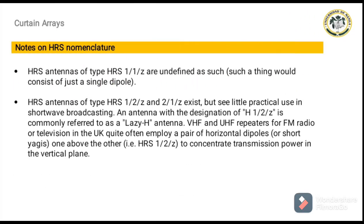Regarding notes on HRS nomenclature: HRS antennas of type HRS 1 1 Z are undefined, as such a thing would consist of just a single dipole. HRS antennas of type HRS 1 2 Z and 2 1 Z exist but see little practical use in shortwave broadcasting. An antenna with the designation H 1 2 Z is commonly referred to as a lazy H antenna. VHF and UHF repeaters for FM radio or television in the UK quite often employ a pair of horizontal dipoles, one above the other, to concentrate transmission power in the vertical plane.